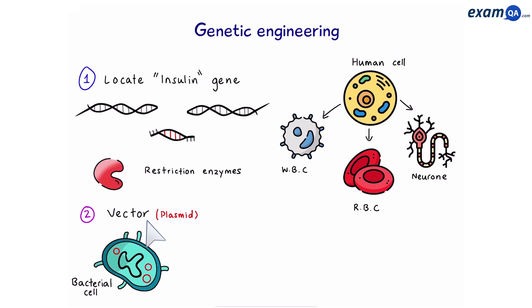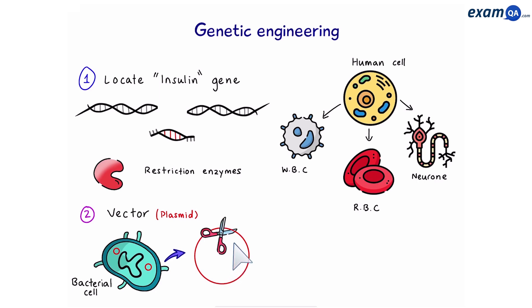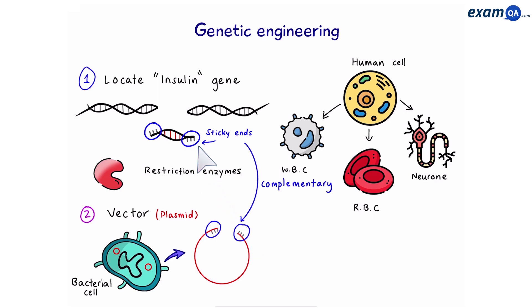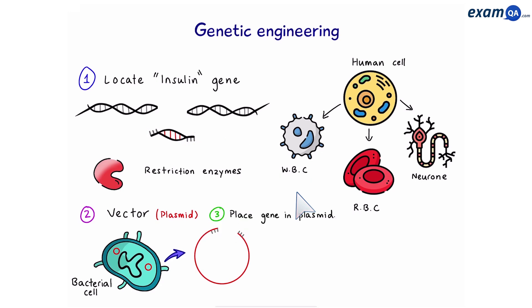You could think of it like a taxi carrying the gene into the bacteria. So let's take one of these plasmids out. We need to make space for the insulin gene, so we're going to cut the plasmid using the same restriction enzyme that we used to cut the human DNA, and we can see that we get more sticky ends. The sticky ends on the human DNA and the ones on the plasmid are going to be complementary — this is the benefit of using the same restriction enzyme. Now that we've opened the plasmid, we can place the gene into it.